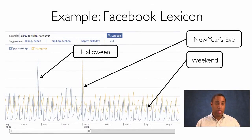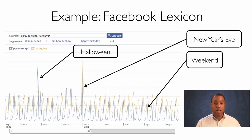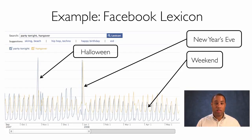The third example of big data is Facebook Lexicon, a service that Facebook has since discontinued. At the time, it allowed you to type in words and see the prevalence of those words on people's wall posts. Here we can see a query for the words 'party tonight' and 'hangover.' On the x-axis is time; on the y-axis is the prevalence of these words. Without even seeing the x-axis, we can identify weekends — the blue curve for 'party tonight' has periodic peaks followed by slightly offset peaks for 'hangover.' We can also see two holidays: New Year's Eve and Halloween.